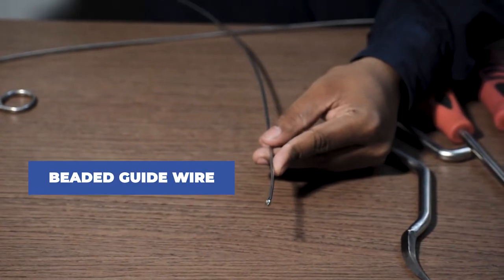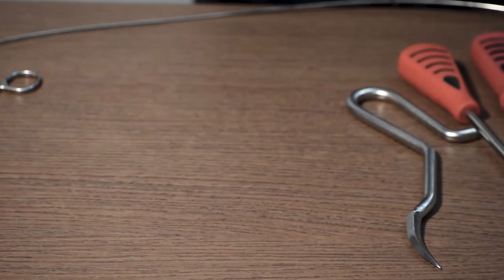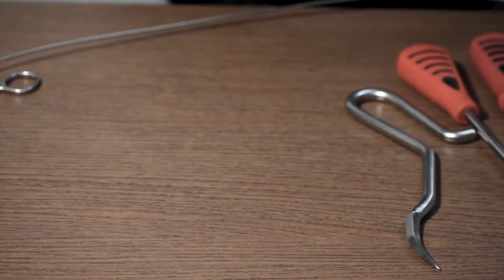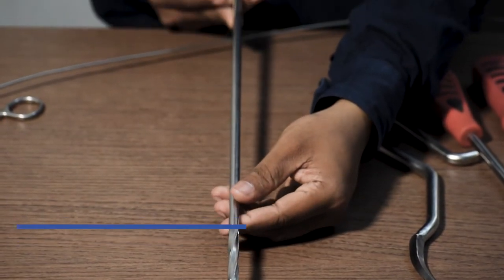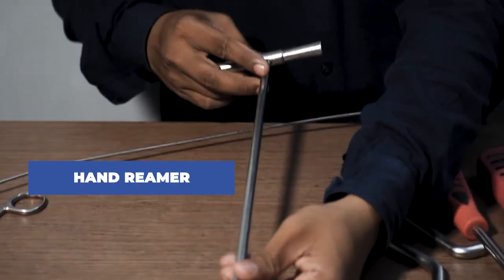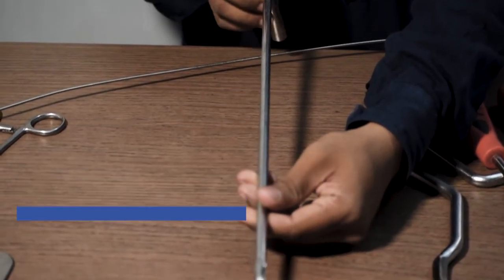Once the entry point is made, this beaded guide wire is inserted into the canal. This device is called a hand reamer. This is used to ream the canal. It also helps to understand the diameter of the canal.